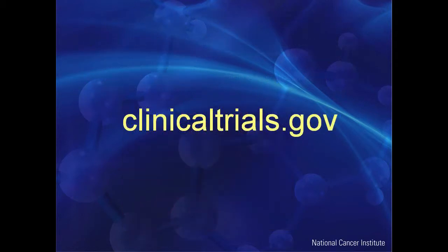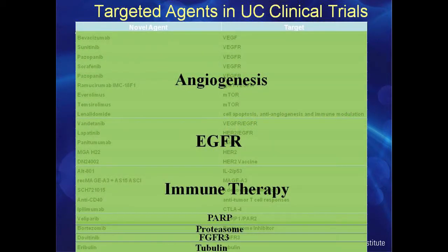An important resource is clinicaltrials.gov, which lists all currently open trials for every tumor type at any academic institute. If you search bladder cancer, you'll see many targeted agents being studied alone or in combination with chemotherapy — the majority are anti-angiogenic agents. Other targets being investigated include EGFR, immune therapy through vaccines or immune stimulators, PARP inhibitors, proteasome inhibitors, FGFR3, and tubulin.